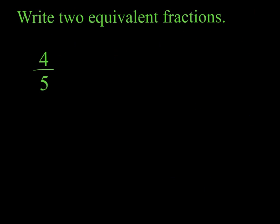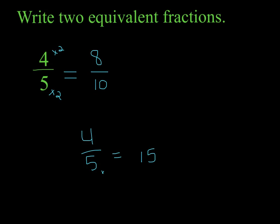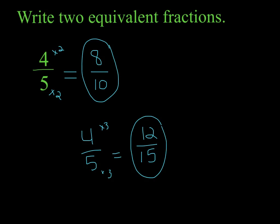In your study notes, write two equivalent fractions for four-fifths. You can pick any number to multiply your numerator and denominator by, as long as it's the same number. Let's start easy and multiply by two: five times two is ten, and four times two is eight — so eight-tenths has the same value as four-fifths. For another equivalent, four-fifths could equal how many fifteenths? Five times three is fifteen, and four times three is twelve. So two equivalent fractions for four-fifths are eight-tenths and twelve-fifteenths. They all have the same value.